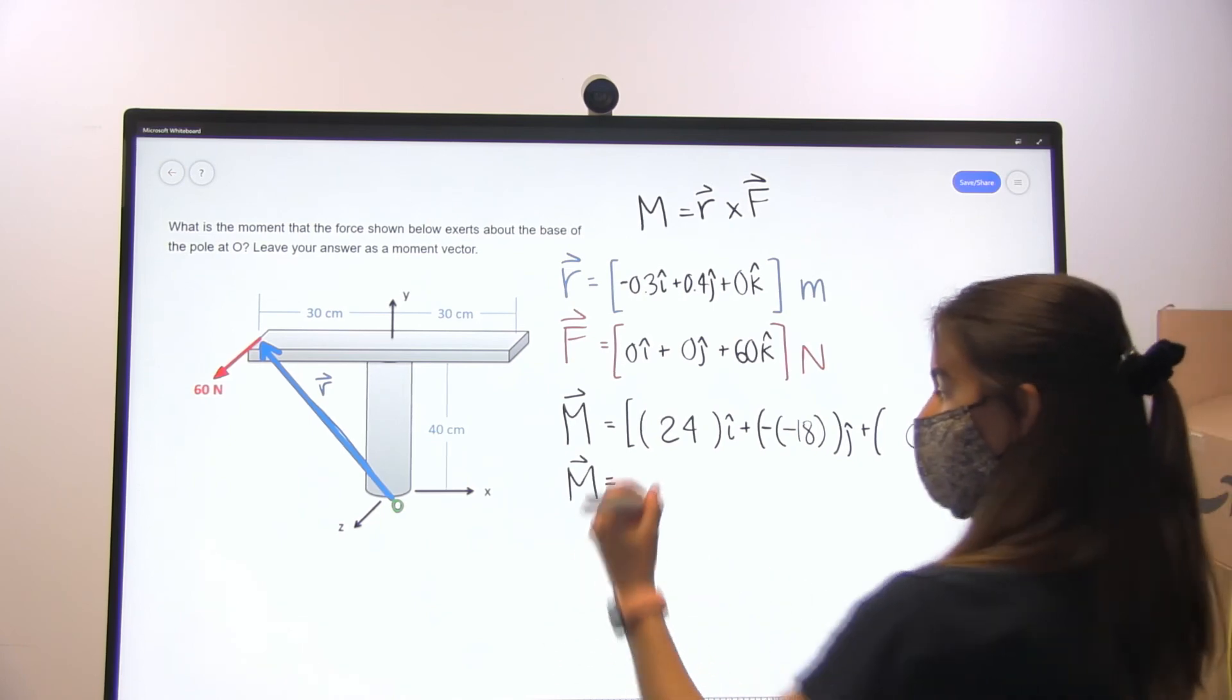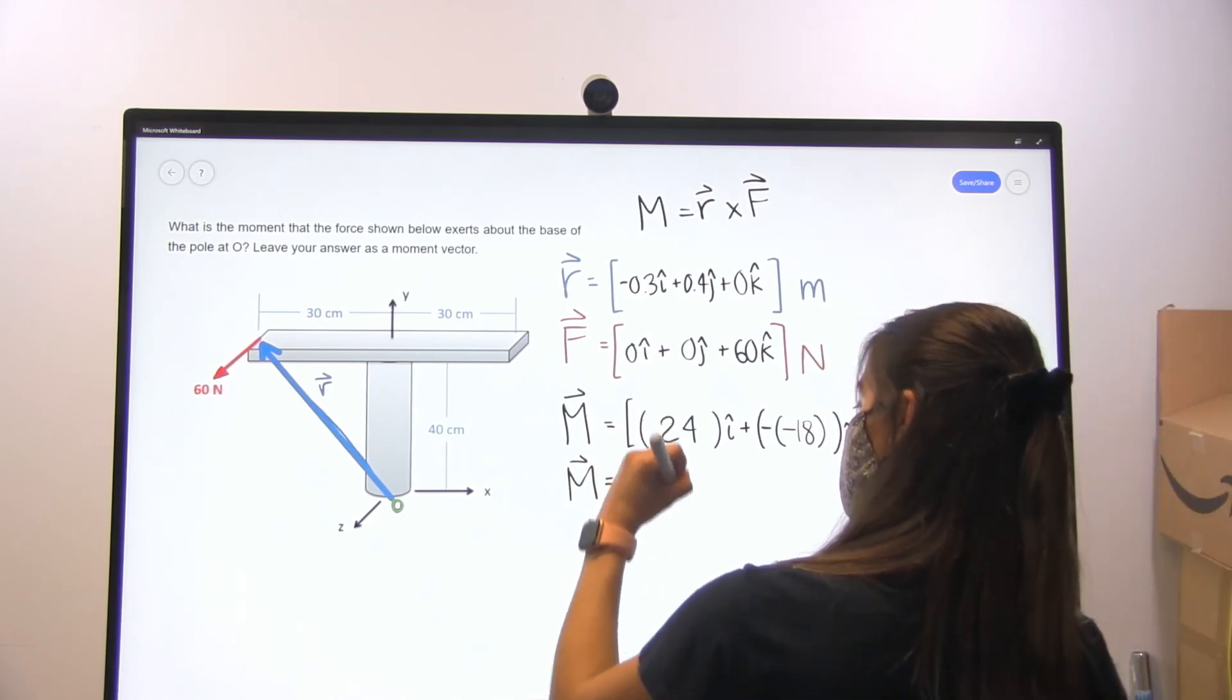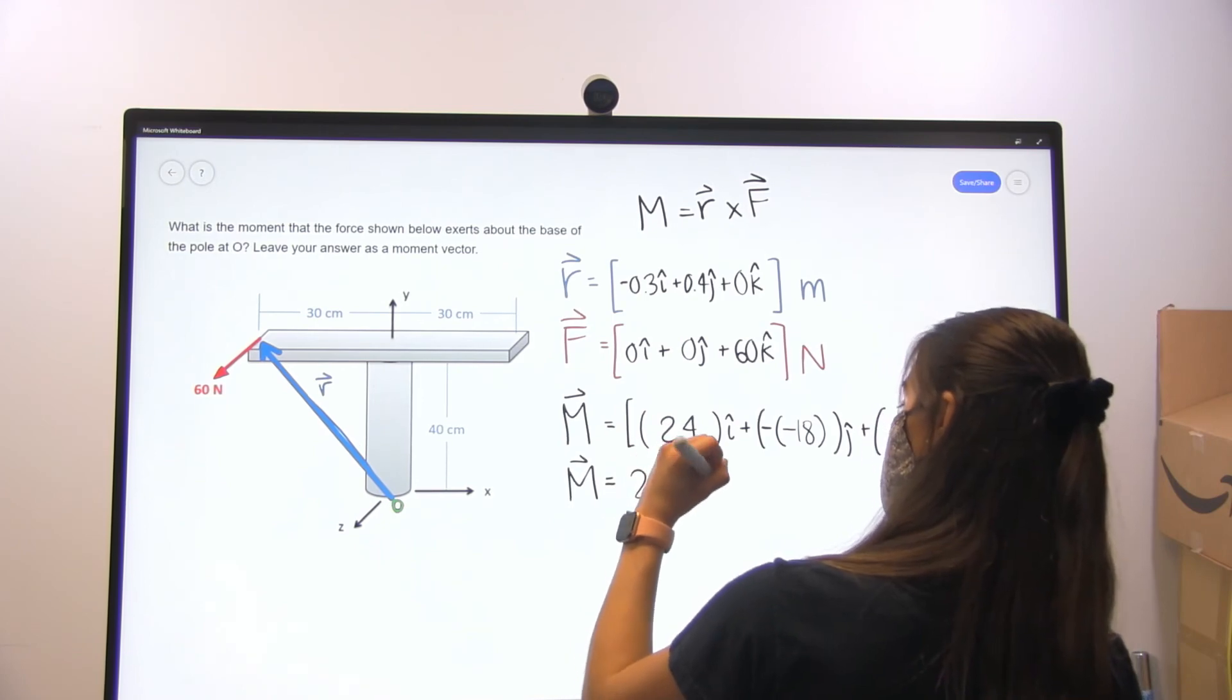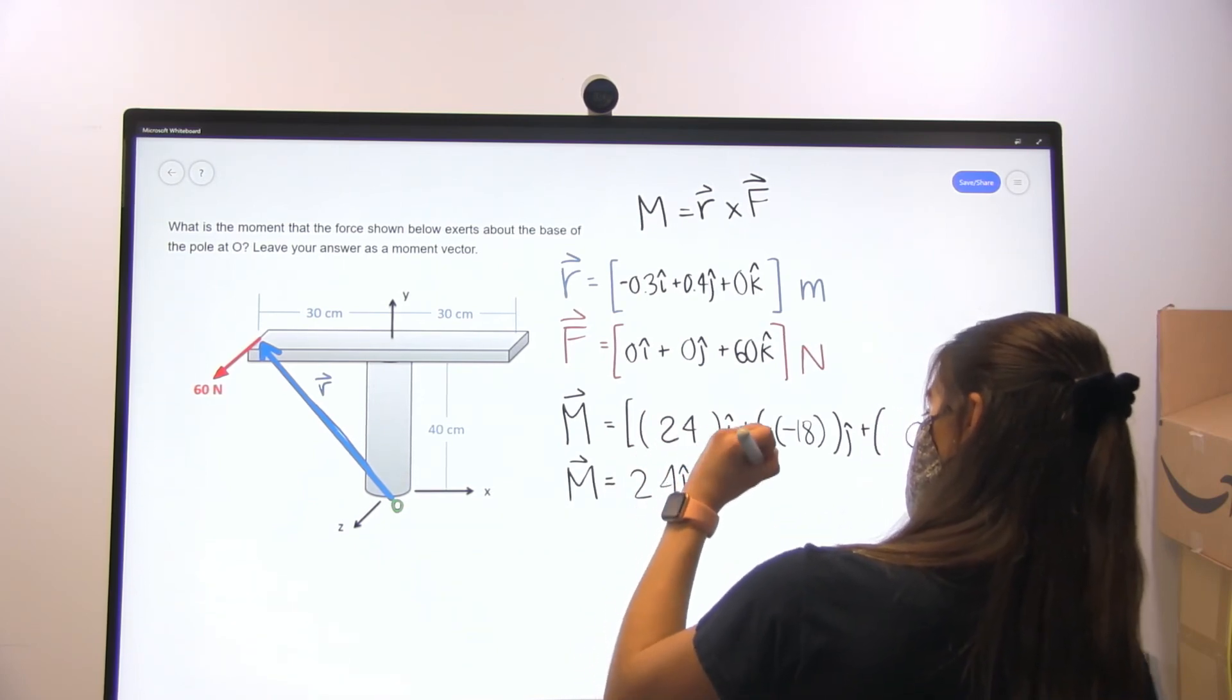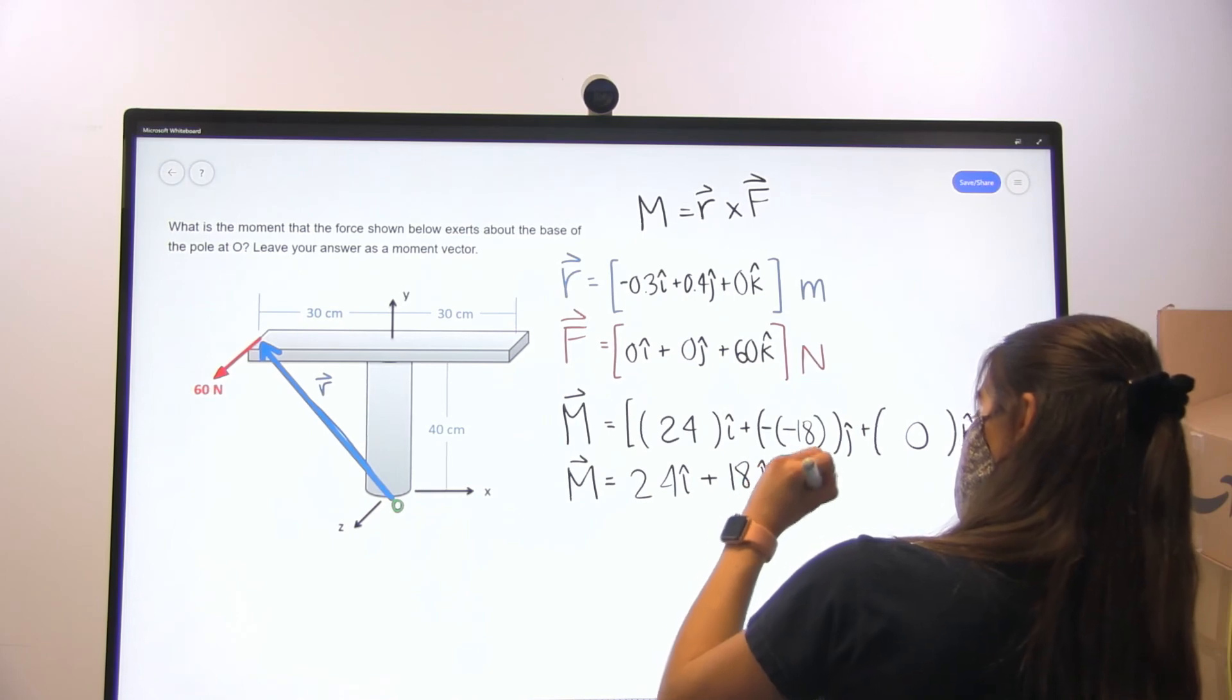So then our moment vector is going to end up being 24i plus 18j newton meters.